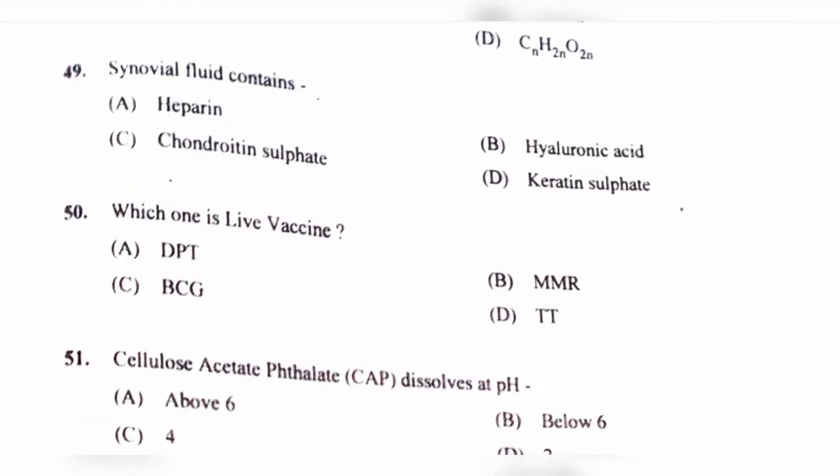Question number 50. Which one is a live vaccine? Option A, DTP; option B, MMR; option C, BCG; option D, TT. The correct answer is option C, BCG. BCG is a live attenuated vaccine. The full form of BCG is Bacillus Calmette-Guérin.